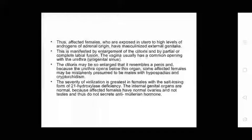Thus, affected females exposed in utero to high levels of androgens of adrenal origin have masculinized external genitalia. This manifests as enlargement of the clitoris and partial to complete labial fusion. The vagina usually has a common opening with the urethra. The clitoris may be so enlarged that it resembles a penis with the urethra opening below the organ. Some affected females may be mistaken for males with hypospadias and cryptorchidism. The severity of virilization is greatest in females with salt-wasting 21-hydroxylase deficiency. The internal genitalia are normal because affected females have normal ovaries, not testes, and thus do not secrete anti-Müllerian hormone.